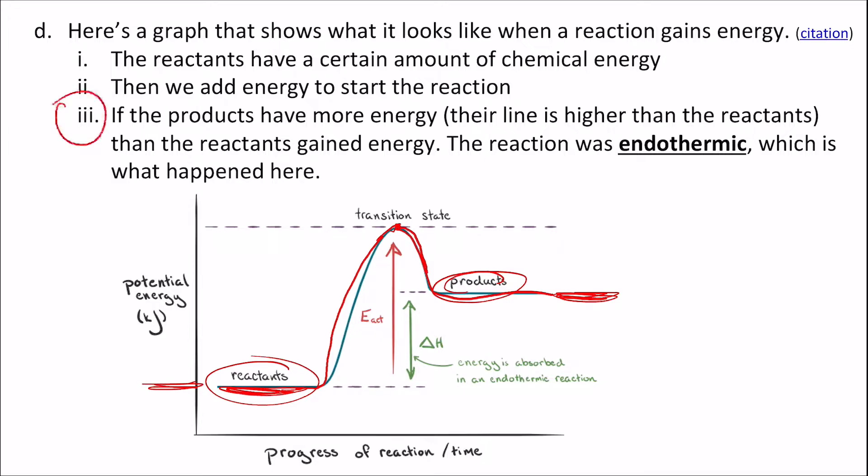And this is what happens with the water example we see here. So if the products have more energy, their line is higher than the reactants, then the reactants gained energy. The reaction was endothermic, which is what happened here.